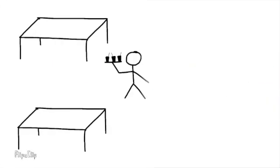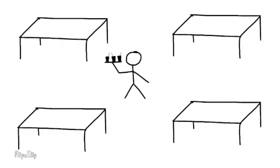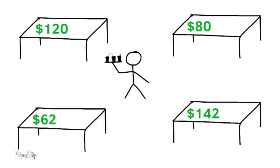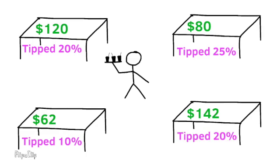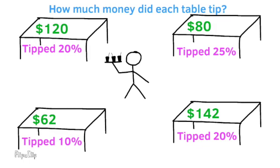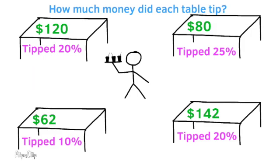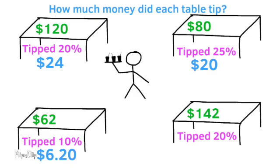Let's apply what we learned. You're a server in this restaurant, and you're responsible for these four tables. The subtotals for the bills are $120, $80, $62, and $142. The party at the first table tipped 20%, the second tipped 25%, the third tipped 10%, and the fourth also tipped 20%. How much money did each table tip? Press pause to calculate the tips. 20% of $120 is $24. 25% of $80 is $20. 10% of $62 is $6.20. And 20% of $142 is $28.40.